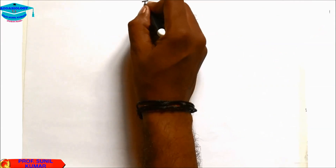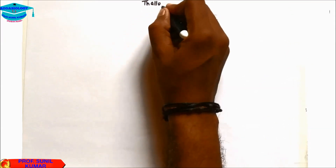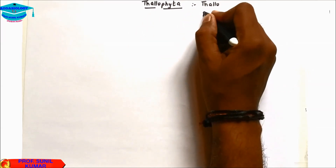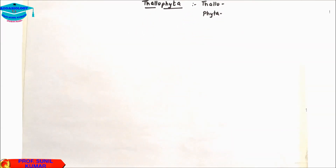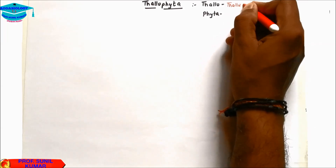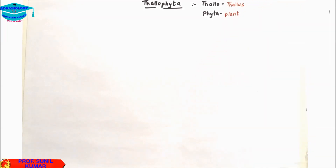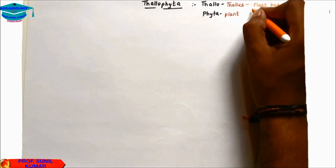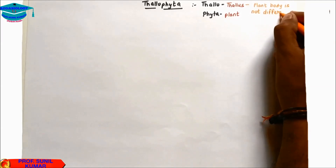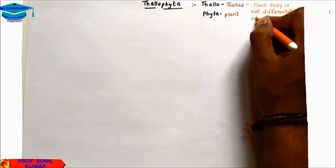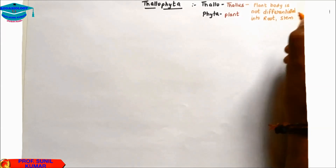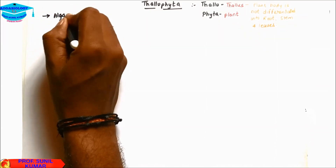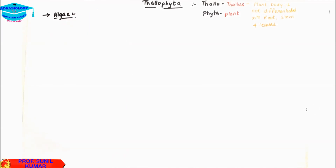Let's understand the first division, Thallophyta. It has two words: Thallus and Phyta. Thallus means when the plant body is not differentiated into root, stem, and leaf — when you look at algae, you cannot distinguish the plant body into root, stem, and leaf; that plant body is called Thallus. Thallophyta includes algae. Let's understand the characteristics of algae.